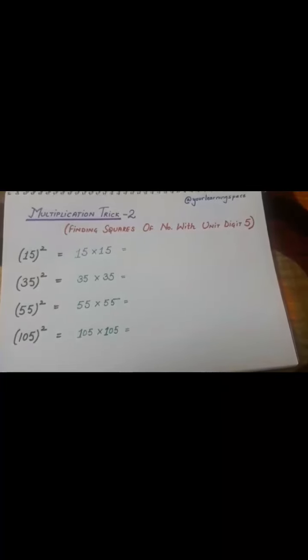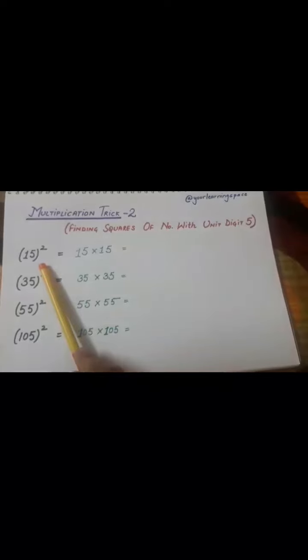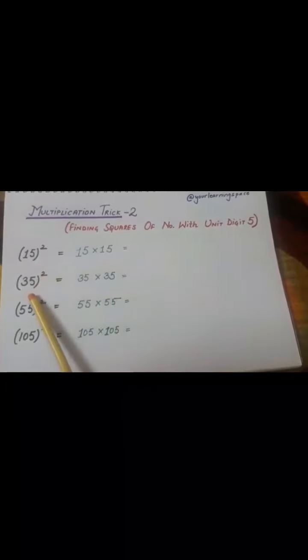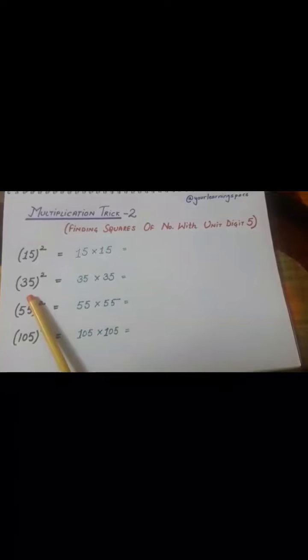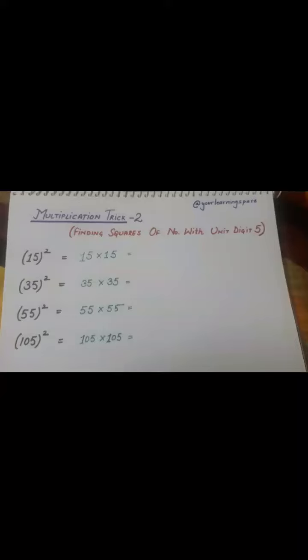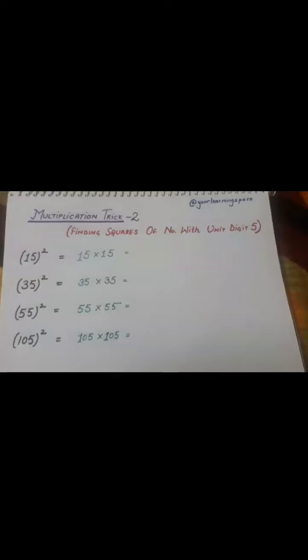As we can see here, we have number 15. We'll be finding 15 squared, which is 15 into 15. Then we'll be finding the square of 25, and then 55 and 105. So in this part, I am going to teach you how to find the squares of numbers ending with unit digit five. Let's start.